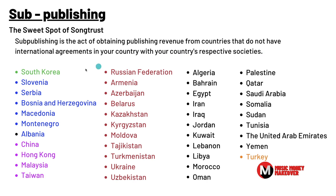These countries are highlighted in different colors because they're represented in blocks or groups that represent a set amount of countries. Song Trust goes into these groups and does sub-publishing deals with them to collect the money and bring it back overseas. One country I didn't see on the list was India, but I'm pretty sure they collect for India.